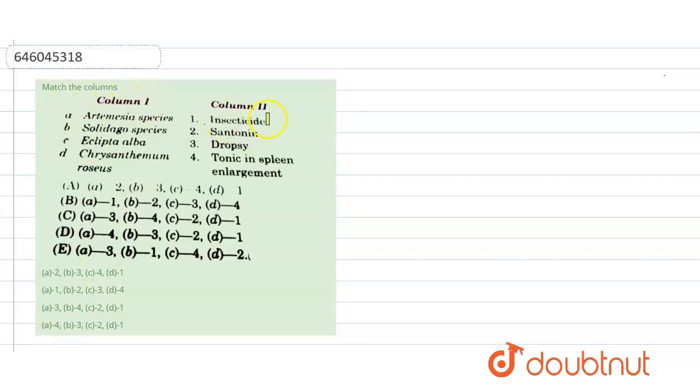Column number one and column number two are mentioned here. In column number one, some species are shown here, and in column number two, some chemicals or treatments which are related with column number one are mentioned here.